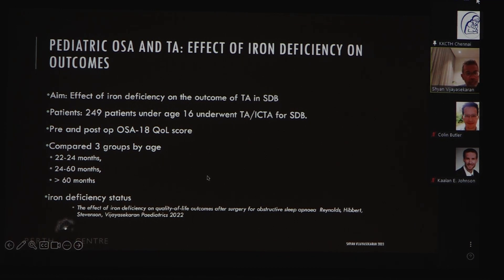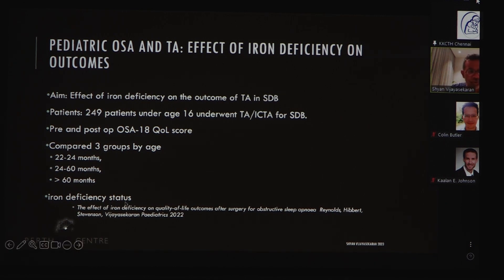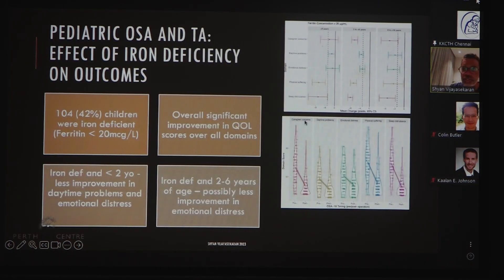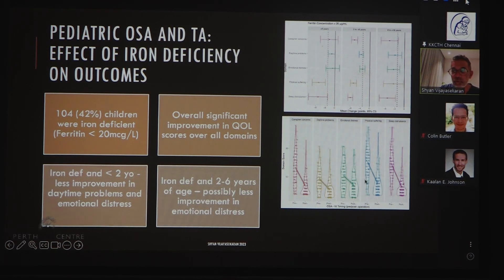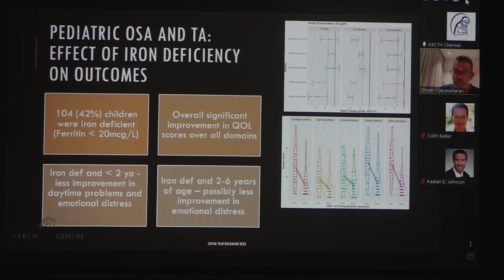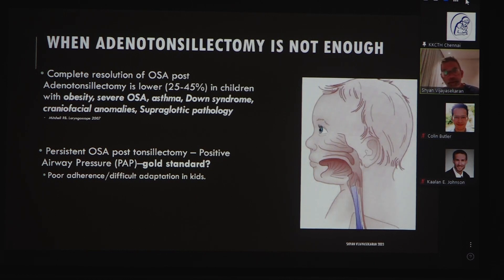If you're doing pre- and post-operative pediatric sleep questionnaires to assess outcomes, does iron deficiency affect your outcome? We looked at roughly 250 patients who underwent adenotonsillectomy or intracapsular tonsillectomy and adenoidectomy for sleep-disordered breathing. In all children there were improvements in OSA-18 outcomes. The only patients who did not have significant improvement in behavioral outcomes were children under the age of two who were iron deficient with ferritins less than 20 micrograms per liter. So if a child has treated OSA but still has daytime irritability, check iron levels and consider supplementation.